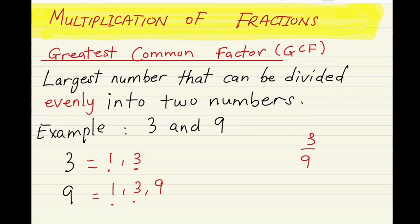3 goes into the fraction 3 one time, and 3 goes into 9 three times. The lowest term of 3 out of 9 is 1 over 3. This is your answer.